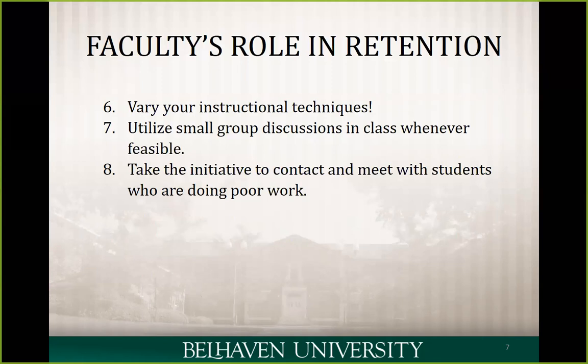Number eight is to take the initiative to contact and meet with students who are doing poor work. If we are not the ones reaching out to find out why a student isn't getting work done or is struggling with particular assignments, nobody else is going to do that. You may share concerns with student services, but they won't always know what's needed to address a student not doing well on a specific project. Sometimes the dean can assist — they might be able to step in and brainstorm with you, or even sit down with you and the student to figure out what's going on and what might be done differently to help.